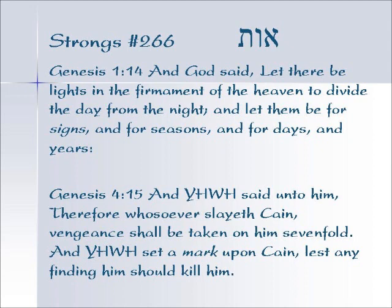Genesis 1:14 — And God said, let there be lights in the firmament of the heaven to divide the day from the night, and let them be for signs and for seasons and for days and years. It's important to notice that the light was already available to be seen. When the signs — the moon, the sun, and the stars — were made, they weren't made to bring the light; the light was already available.